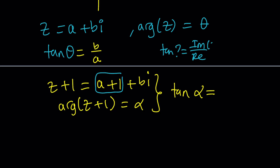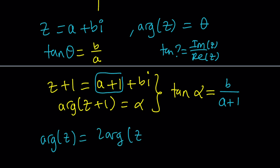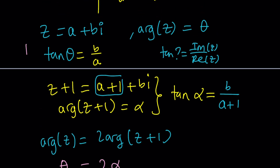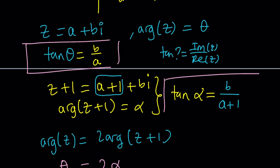So tangent alpha is the imaginary part B divided by the real part A plus 1. We got two tangents, and we also know that the argument of z is 2 times the argument of z plus 1. So we've defined argument of z as theta and argument of z plus 1 as alpha, giving us the relationship theta equals 2 alpha. Let's go ahead and work with those equations.